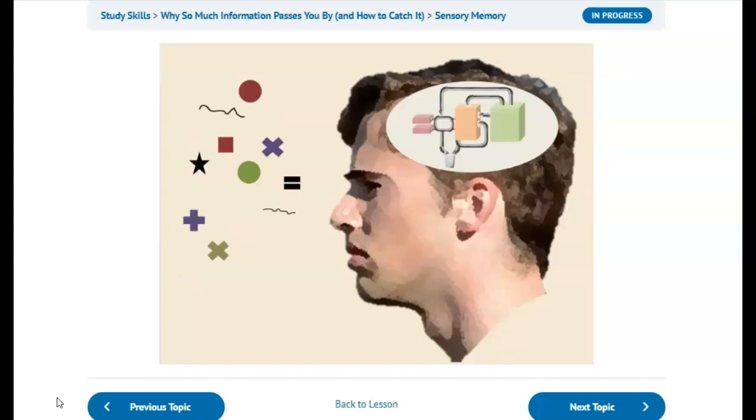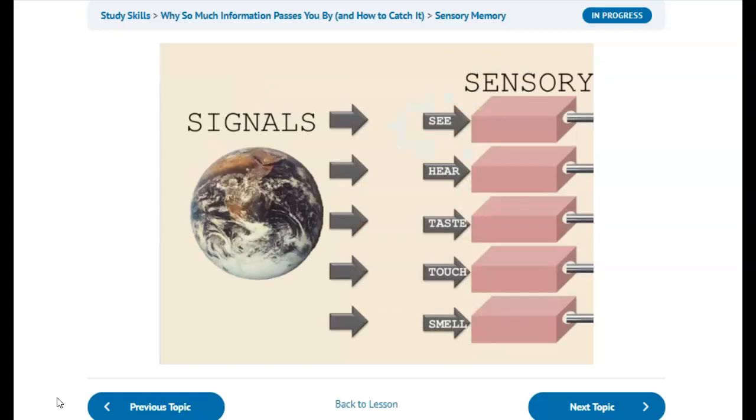Sensory memory gives us a snapshot of the state of the world at a specific moment. Our mind then uses this snapshot as a starting point for more information processing. Each of our five senses—seeing, hearing, taste, touch, and smell—has a sensory memory. Signals are stored in the relevant sensory memory for very brief periods.